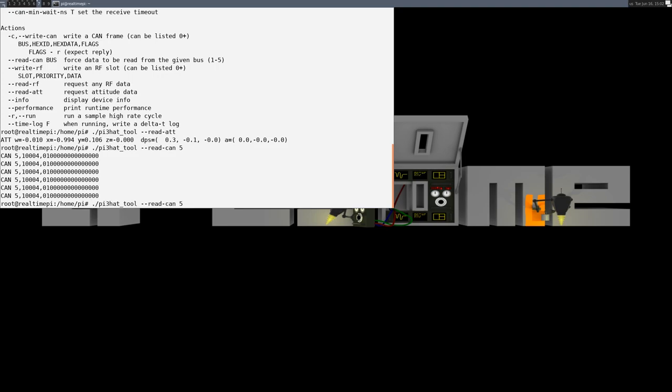The simple way to send packets is to use the write can or dash C command line option. Each instance takes a comma-separated string consisting of first the bus to use, then the hex ID, then a hex data string. I'll just do a simple query,